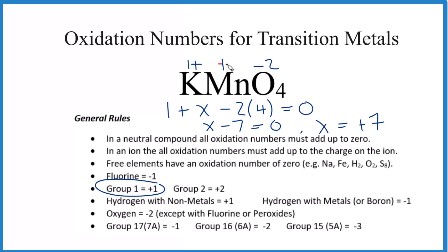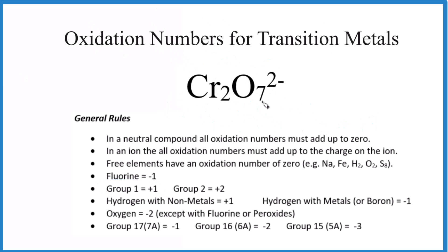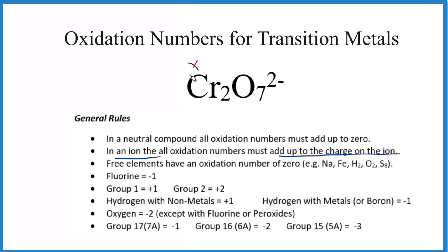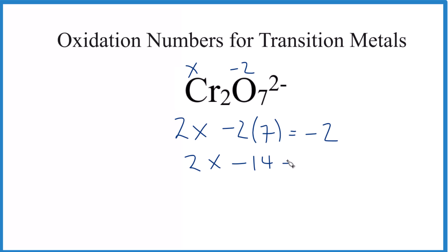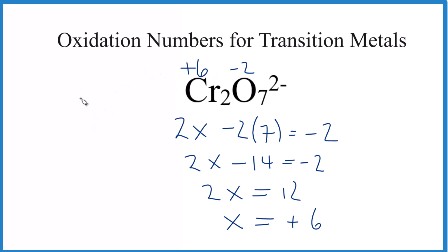Let's do one more with an ion that contains a transition metal — finding the oxidation number for the metal in that ion. The rule here is: if we have an ion, all the oxidation numbers add up to the charge on the ion, which is two minus. Set up the equation: 2x (for two chromiums) plus negative two times seven (for seven oxygens) equals negative two. So 2x minus 14 equals negative two; adding 14 to both sides gives 2x equals 12, so x equals positive six. The oxidation number on each chromium is plus six.